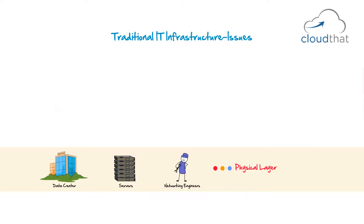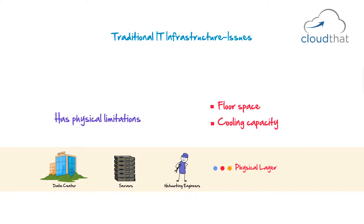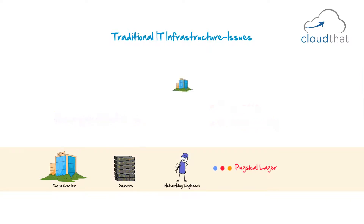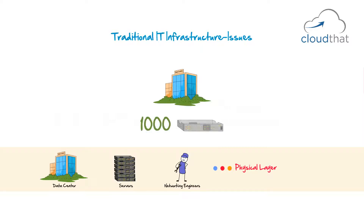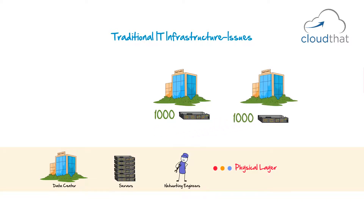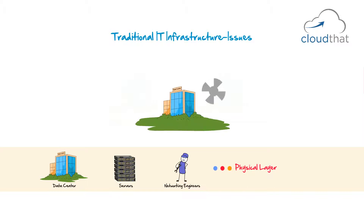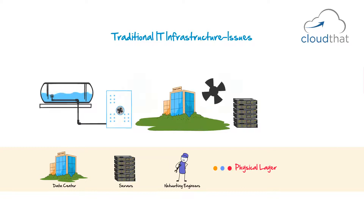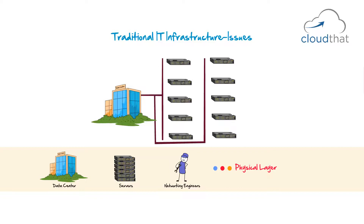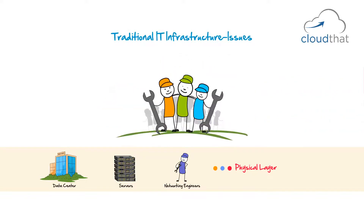The physical layer also has physical limitations: floor space, cooling capacity, etc. Let's say your data center has capacity for 1000 servers and you need to add another 1000 machines — you will have to find another place to house those extra servers. If you're lucky, you'll find a place nearby; if not, you'll have to start the entire process again: searching for a safe place, renting it out, arranging for cooling, backup power, and equipment. You will also need a lot of good network engineers. Managing the network of 10 servers can be handled by a single person, but networking thousands of servers requires teams of quality network engineers handling installation, setup, maintenance, and support.